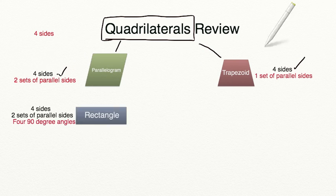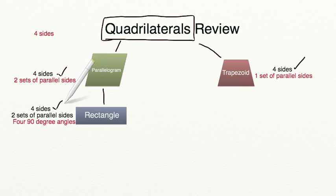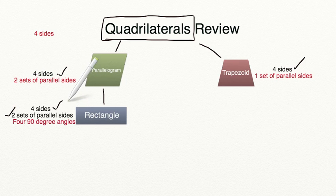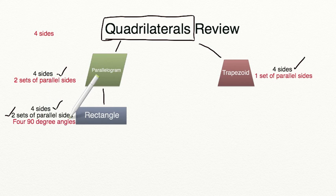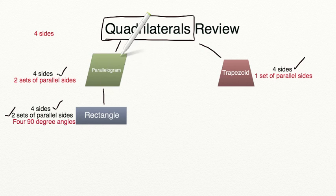Below parallelogram, we are going to have a rectangle. A rectangle meets the expectation of a quadrilateral — having four sides — and it also must meet the expectation of a parallelogram, having two sets of parallel sides. But then we get even more specific: it also has to have four 90-degree angles. So a rectangle will always be a parallelogram, but a parallelogram will not always be a rectangle, because a parallelogram does not always have four 90-degree angles.